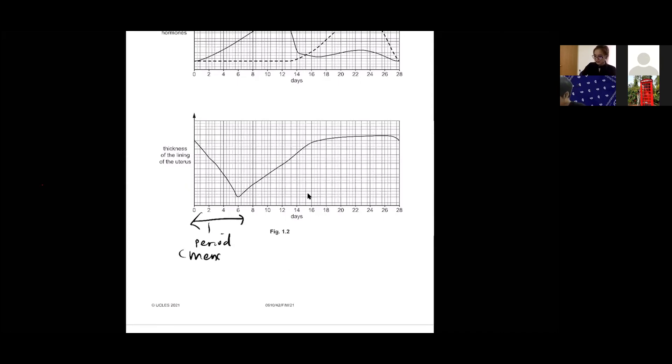How you know it is a period or menstruation? You can say period or you can say menstruation. How do you know? Because the lining... yes, breakdown. Thank you Declan. Very good, breakdown of the uterus lining, correct. So as the uterus lining breaks down, the thickness decreases.